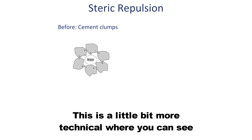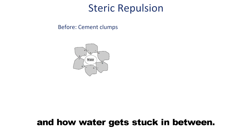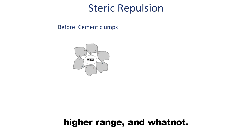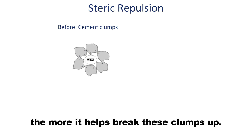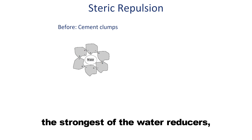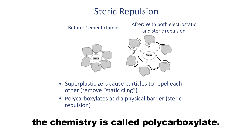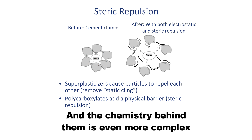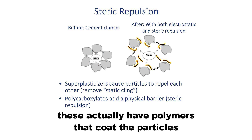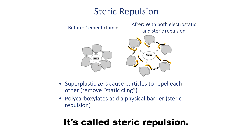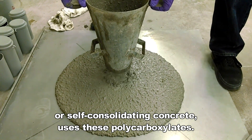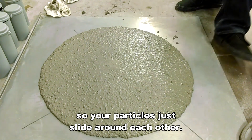This is a bit more technical — you can see the positive and negative charges of the particles and how water gets stuck in between. The different strengths of water reducers have different degrees of effectiveness: low range, mid range, high range. The stronger the water reducer, the more it helps break these clumps up. The strongest of the superplasticizers use a chemistry called polycarboxylate. The chemistry is even more complex and sophisticated — instead of just acting like a dryer sheet so your socks don't stick together, these have polymers that coat the particles and act like a physical barrier that helps separate them. It's called steric repulsion. That's why SCC, or self-consolidating concrete, uses these polycarboxylates — you can use a lot less water and still get a lot of lubrication, so your particles just slide around each other.